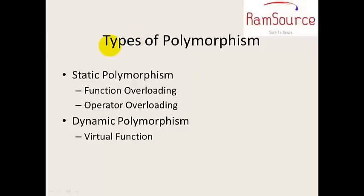There are different types of polymorphism: static polymorphism and dynamic polymorphism. Static polymorphism includes function overloading and operator overloading. Dynamic polymorphism uses virtual functions.